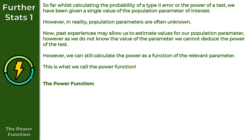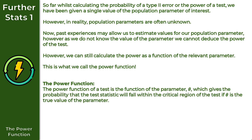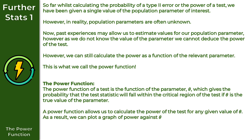So let's formally define the power function. The power function of a test is the function of the parameter theta which gives the probability that the test statistic will fall within the critical region of the test if theta is the true value of the parameter. A power function is useful because it allows us to calculate the power of the test for any given value of theta, and we can plot a graph of power against theta. We'll see an example of that in the next video.